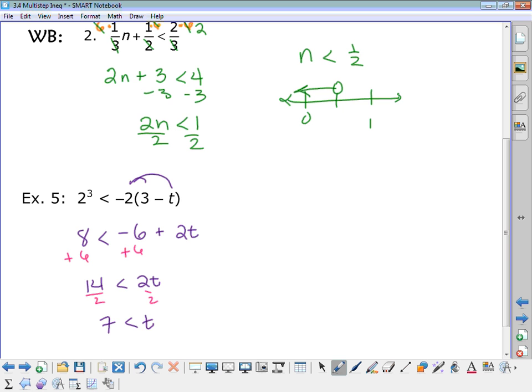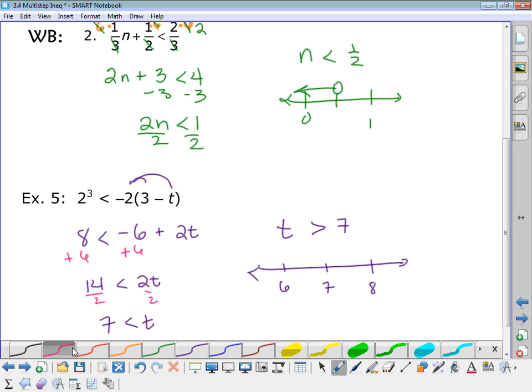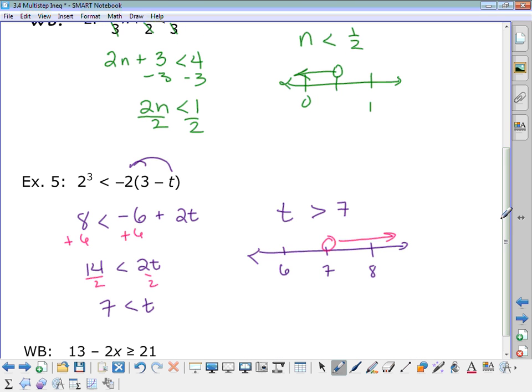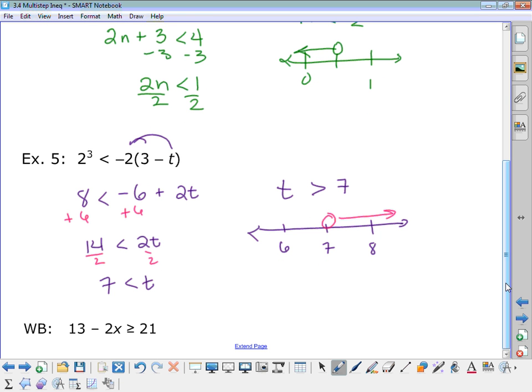And again, before you graph it, write it the other way around. t is greater than 7. And that way you're less likely to make an error when you're graphing it. So this one would be an open circle going to the right. Any questions? All right. Here's one more for your whiteboards.